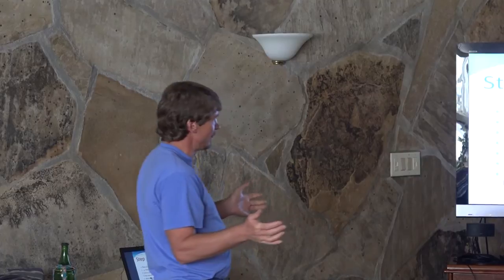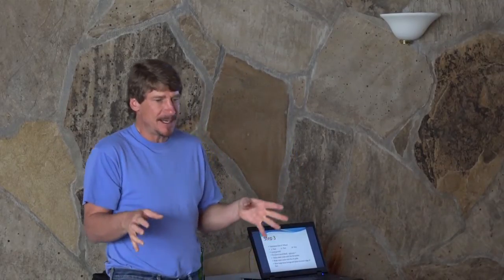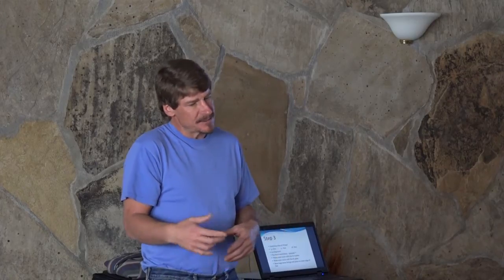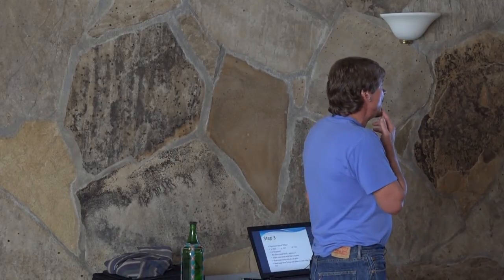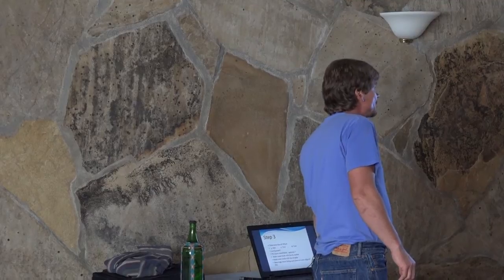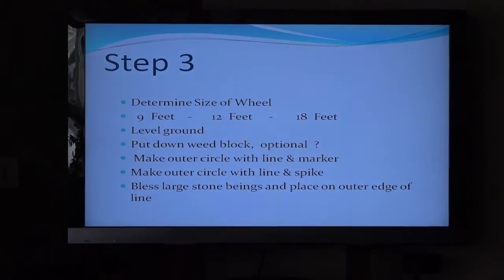Weed block is optional, like I say. In a community where you have several people, not such a big deal to go out there and pull a few weeds. But I found by myself this year that I spent literally three to four full days, once every three weeks, of pulling all those plants out there. And I don't like even killing them myself. I don't like, I prefer going down there sitting and meditating and putting my love and appreciation to the waterways of the planet, instead of down on my hands and knees pulling weeds. So you make your, basically you make your outer circle with a line and spike and then basically place around the edge, all of your larger stone beings.